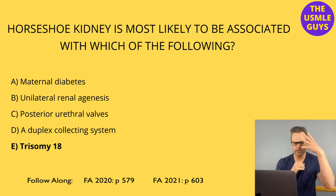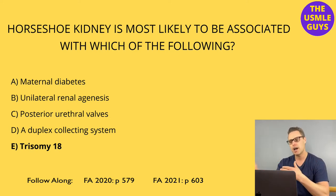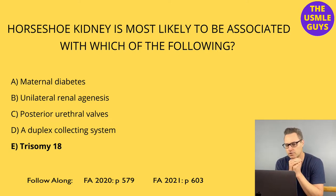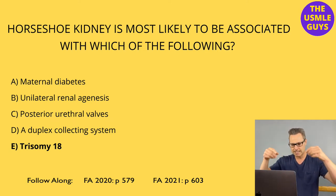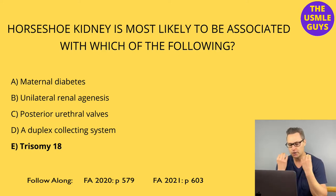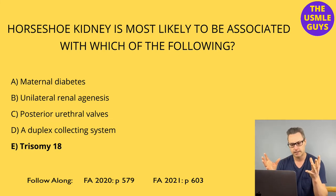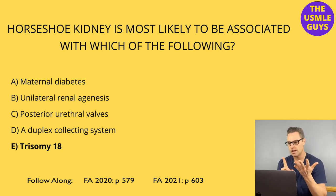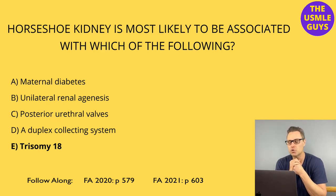If you see a patient in a vignette with Down syndrome, they've got a higher risk. You see someone with trisomy 13 or 18, they've got a higher risk. What's happening is that the kidneys are fusing at the inferior poles, and then as they ascend in the abdomen, they get caught underneath the first vessel they encounter — which is the inferior mesenteric artery. The kidneys still work and you might never know this is present. However, it could be associated with hydronephrosis, renal stones, infection, and an increased risk of renal cancer.